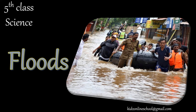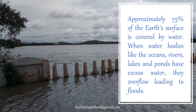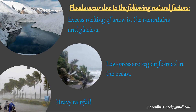About Floods. Approximately 75% of the earth's surface is covered by water. When water bodies like the oceans, rivers, lakes and ponds have excess water, they overflow into floods. Floods are due to the following natural factors: melting of snow in the mountains and glaciers, low pressure regions formed in the ocean, and heavy rainfall.